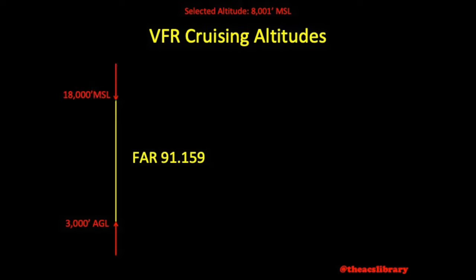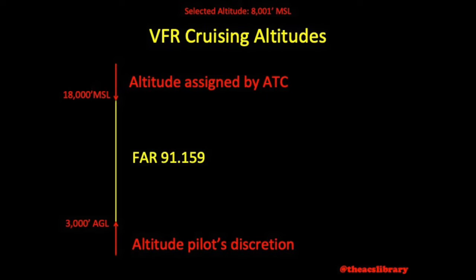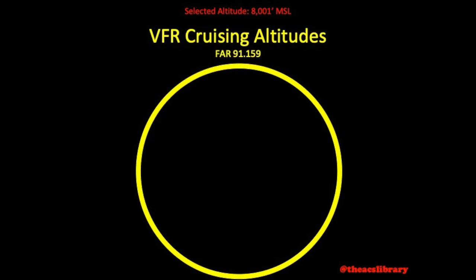Moving on to VFR cruising altitudes, FAR 91-159 is the law here. This applies to pilots operating above 3,000 feet AGL and below 18,000 feet MSL, while not turning. Below 3,000 feet AGL, altitude is at the pilot's discretion. Above 18,000 MSL, pilots maintain altitudes assigned by ATC.